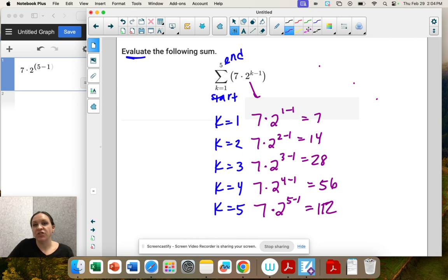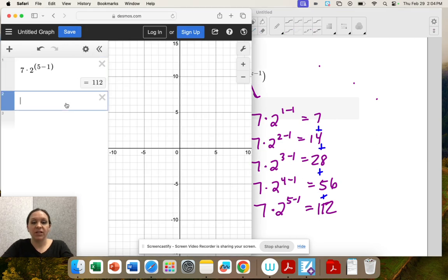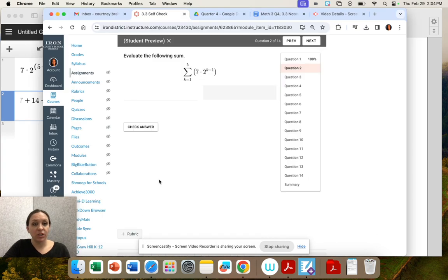Okay, so this is a summation. We're going to add these all together and that's going to be our answer. So 7 plus 14 plus 28 plus 56 plus 112 which is 217. That's our sum.